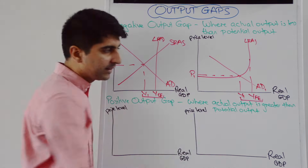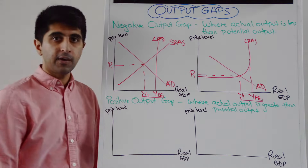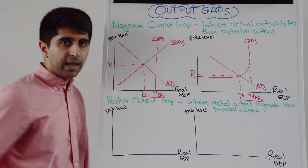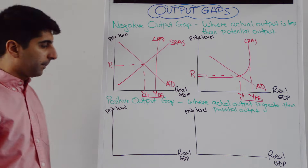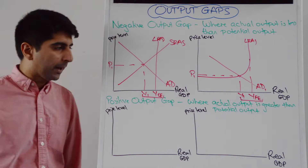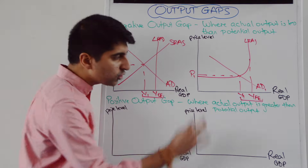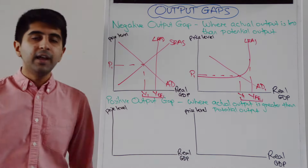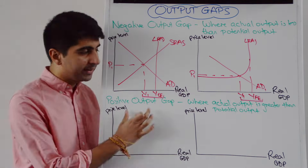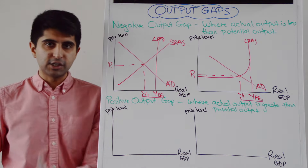Actual level of output is less than the potential level of output. This is a negative output gap using a Keynesian LRAS diagram. What about a positive output gap? Well, a positive output gap occurs where the actual level of output is greater than the potential level of output. Another name for this is an inflationary gap.